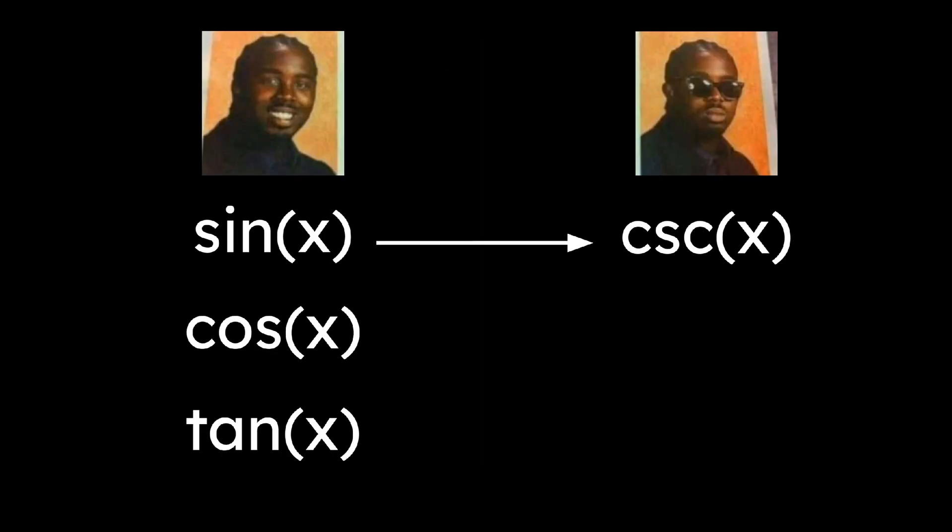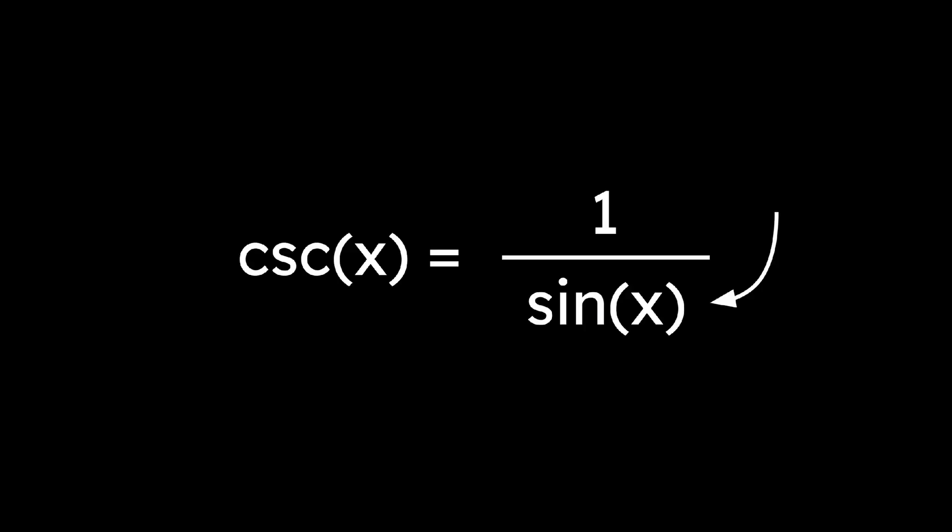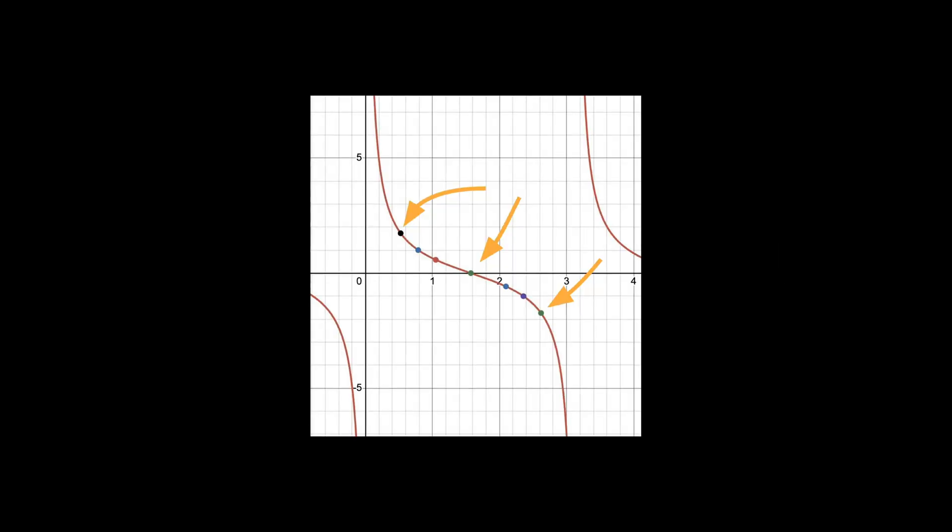The reciprocal of sine, cosine, and tangent are cosecant, secant, and cotangent. Their graphs are a little weird, but just find the asymptotes by setting the denominator equal to 0 and plotting points.